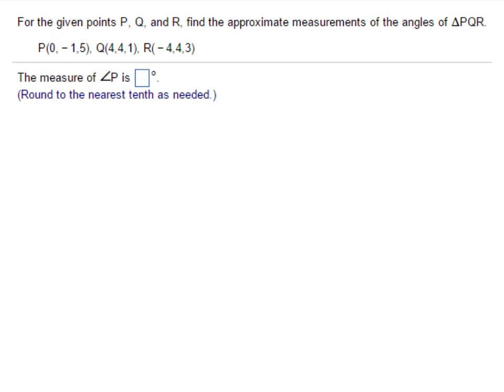So here's the problem we're going to be working on. We're given three points in three-dimensional space, P, Q, and R, and we're asked for all of the angles of the triangle. I'm just going to work through finding angle P here, but the other two angles are pretty similar.